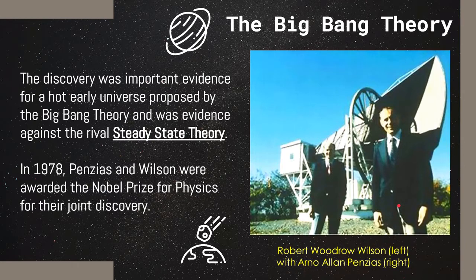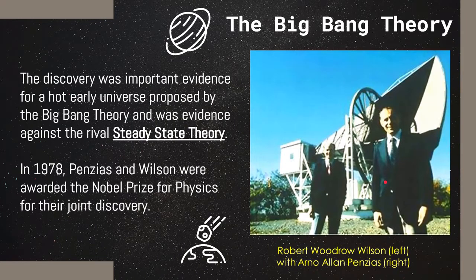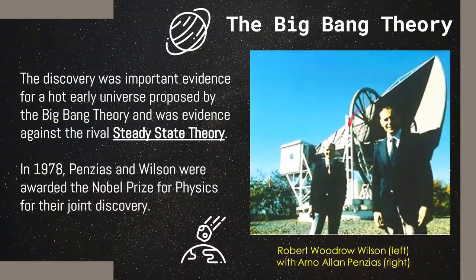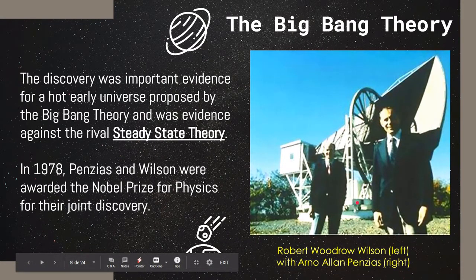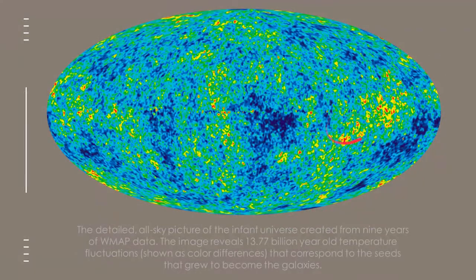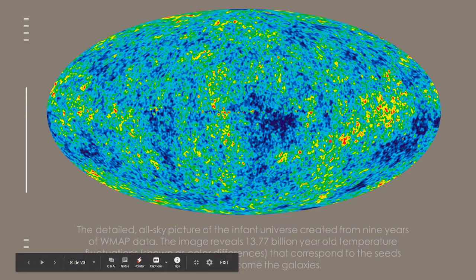Their discovery was important because it proposed a hot early universe still from the Big Bang and it was an evidence against the rival steady state theory. We will learn more about this theory in our next video. Wilson and Penzias were eventually awarded with a Nobel Prize for their discovery of the Cosmic Microwave Background Radiation. Side note, their discovery was considered accidental because they did not intend to discover the Cosmic Microwave Background Radiation. They just keep on getting these readings from their instrument and they thought that it was just dirty. They tried to clean their instrument, but no matter how many times they clean it, they keep on getting the same reading. That led them to study and look into it deeper and eventually they discovered that those were actually the remnants of the Big Bang that happened 13.77 billion years ago.